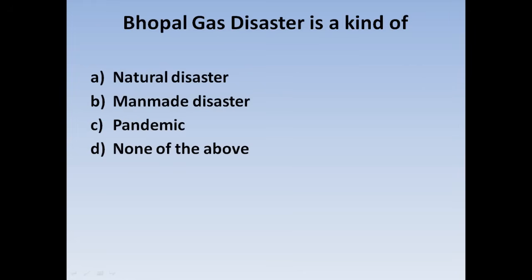Next question: Bhopal gas disaster is a kind of — Option A: Natural disaster, Option B: Man-made disaster, Option C: Pandemic, Option D: None of the above. Bhopal gas disaster is a man-made disaster. Correct answer: Option B.